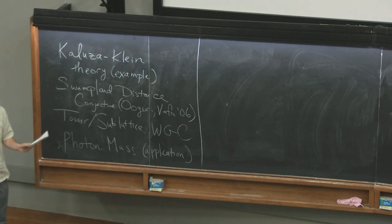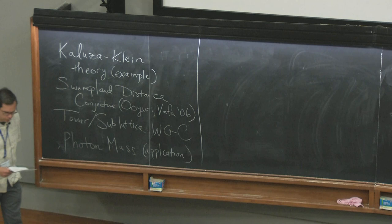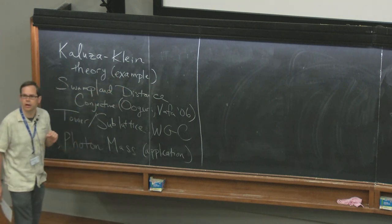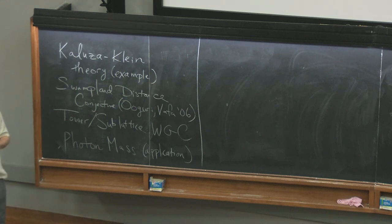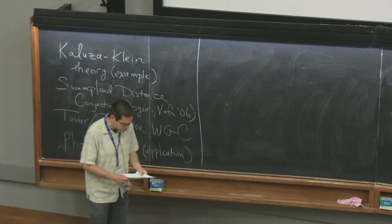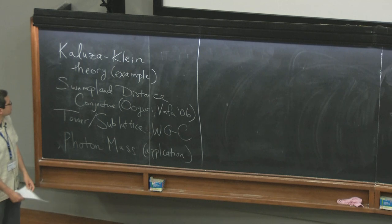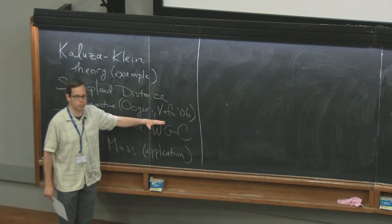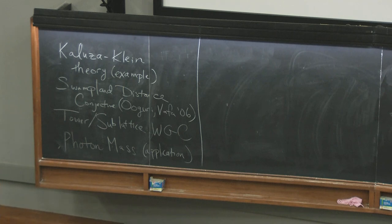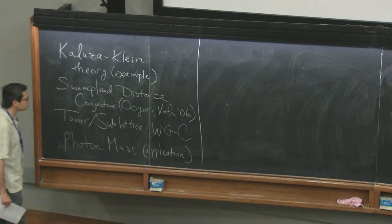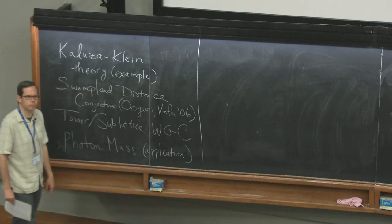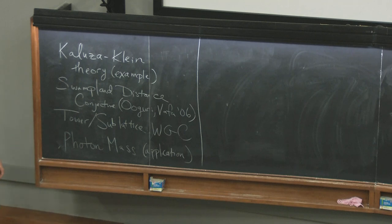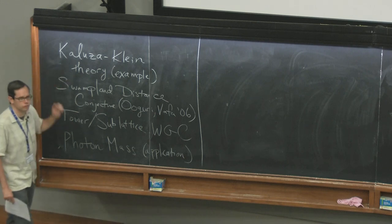If you've already started working on the problems I posted, you may have figured some of this out for yourself, but it's worth working through the details on your own. It turns out that a lot of the features of this example actually generalize to basically all theories of quantum gravity that we know. After I discuss Kaluza-Klein theory, I'm going to talk about the swampland distance conjecture, formulated by Hiroshi Oguri and Kamran Vafa back in 2006, which has recently seen a revival of interest and can apply to lots of theories like theories of inflation. We'll also see that it connects nicely with the Kaluza-Klein example.